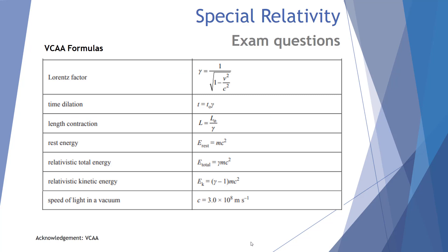For questions that require calculations, we have the following VCAA formulas. We have the equation for the Lorentz factor, which is very important in many of the calculations we perform. Also time dilation, length contraction, rest energy, relativistic total energy, relativistic kinetic energy, and the speed of light as a constant in a vacuum. We'll use all of these in the following questions.